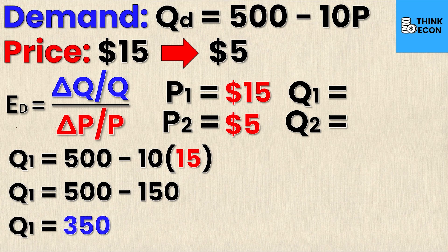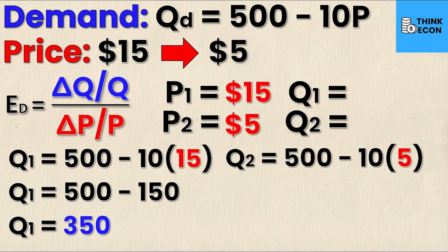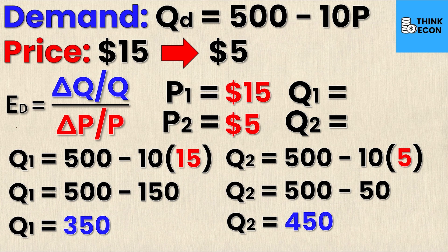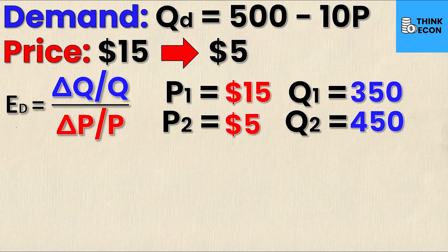To find Q2 is very similar. I'm just going to substitute in P2 into the demand equation and solve for Q. If I do this I get an equation that looks like this: 500 - 10 × 5. Upon further simplification I get 500 - 50, and then finally I can do this simple subtraction to get Q2 is equal to 450. So now I'm going to substitute those in to my known values since I've now calculated for them.